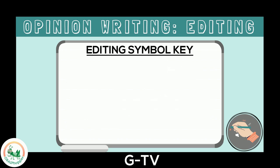One editing symbol is for inserting a word. You use the caret symbol, which looks like an upside-down V, to show where you want to add in a word. Here is an example: 'They to the park.' The sentence is missing a word, so I put a caret and write the missing word on top of that — 'walked.'